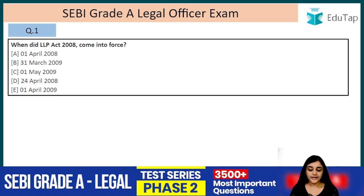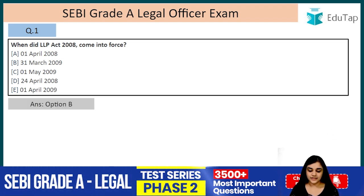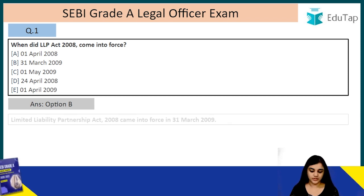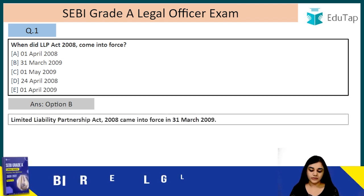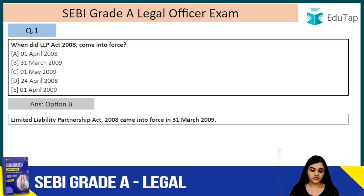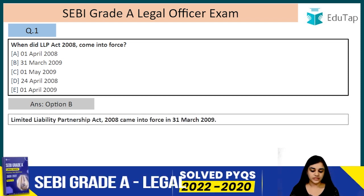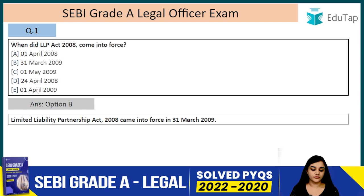Question number one: when did the LLP Act 2008 come into force? The answer is option B — March 31st, 2009. The Limited Liability Partnership Act 2008 came into force on 31st March 2009.